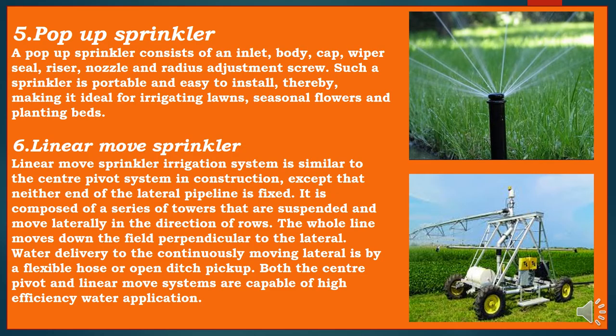The fifth type of sprinkler irrigation is the pop-up sprinkler. A pop-up sprinkler consists of an inlet, body, cap, wiper seal, riser, nozzle, and radius adjustment screw. Such sprinklers are portable and easy to install, making them ideal for irrigating lawns, seasonal flowers, and planting beds.